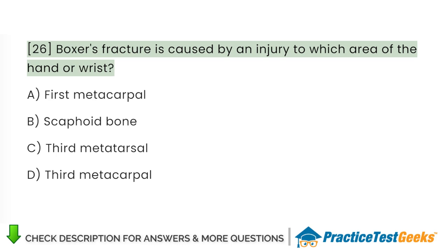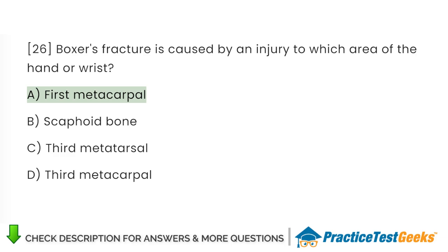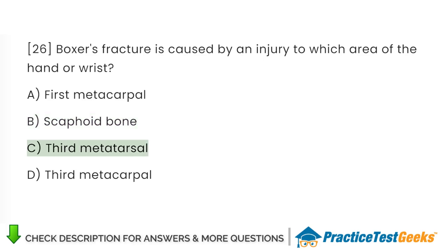Boxer's fracture is caused by an injury to which area of the hand or wrist? A. First metacarpal. B. Scaphoid bone. C. Third metatarsal. D. Third metacarpal.